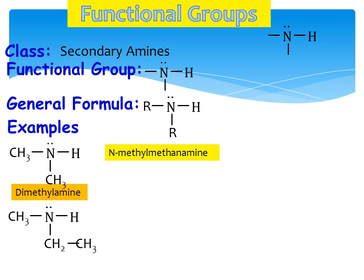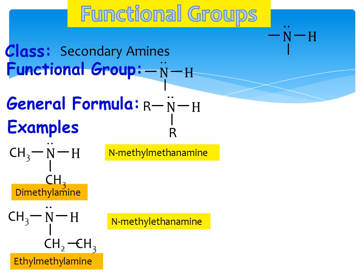When both R groups in a secondary amine are different, the common name follows alphabetical order — for example, methyl ethyl amine. For the IUPAC name, the smallest group is taken as the substituent and N goes with the bigger group, so the name is N-methylethanamine. This differs from ethers, where O goes with the smaller R and the bigger R is named as the parent.